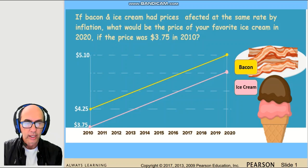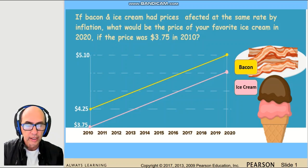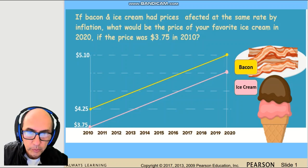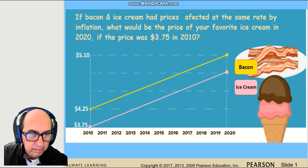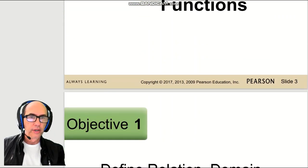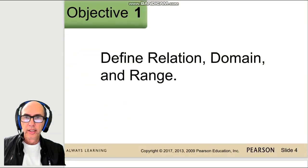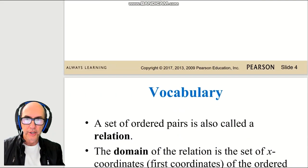Think about it and write down your answer. At the end of this lesson we will check the right answer. Section 3.2, Functions — the first objective is to define what is a relation, domain, and range.